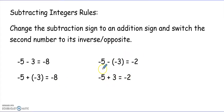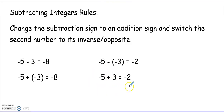For the second example, negative 5 minus negative 3: we change the subtraction to addition and switch negative 3 to its inverse or opposite, which is positive 3. That gives us negative 2, because using adding integers rules, 5 minus 3 gives us 2, and the higher absolute value is negative, so it's negative 2.